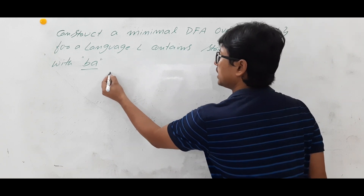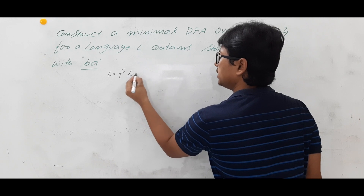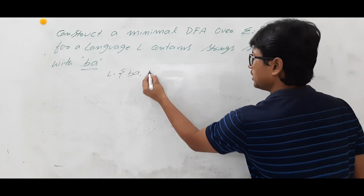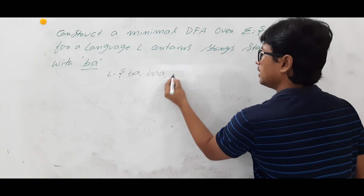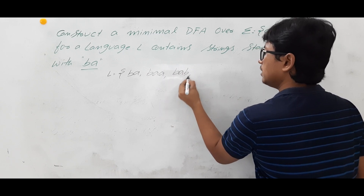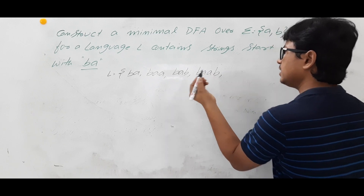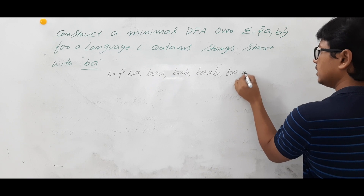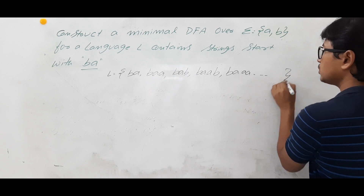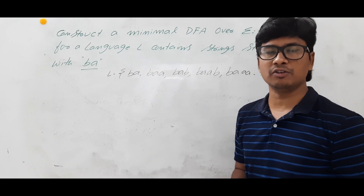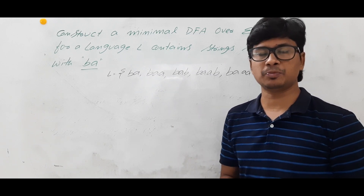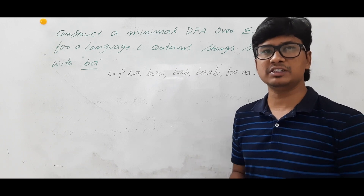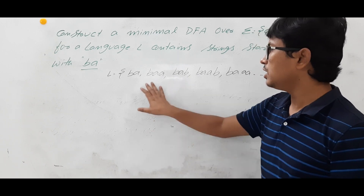The language L consists of the string BA, because BA starts with BA. Then you will have BAA, BAB, BAAB — anything can come after BA. So it is an infinite language. If it is an infinite language, there may or may not be a DFA possible. We will check whether a DFA is available.